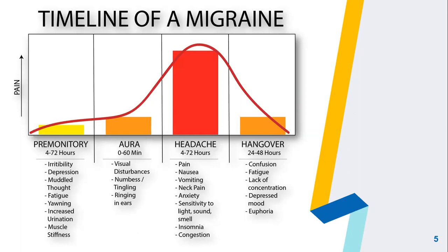Premonitory symptoms include irritability, depression, muddled thought, fatigue, yawning, increased urination, and muscle stiffness. The aura usually occurs before the head pain begins and generally lasts less than 60 minutes. Sometimes migraine aura occurs with little or no headache, especially in people aged 50 or older. These symptoms include visual disturbances, numbness, tingling, and ringing in ears.